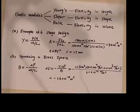Let's look at a sample problem in our textbook, sample 12.6. Imagine a cable is used to support an actor as he swings onto the stage. Suppose that the tension in the cable is 940 Newton as the actor reaches the lowest point. What diameter should a 10 meter long steel wire have if we do not want it to stretch more than half a centimeter under these conditions? So this is something about elasticity in length.